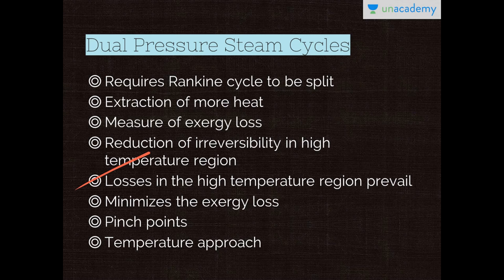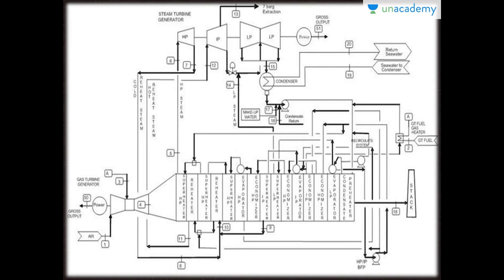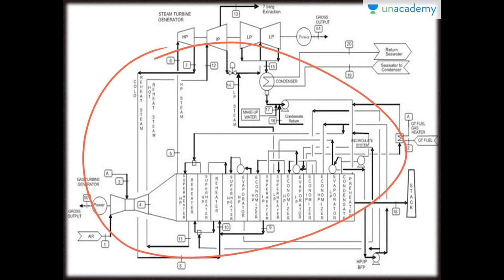At low steam pressure, the losses in the high temperature region prevail. Thus, there is an optimum steam pressure when the sum of areas A plus B plus C is at a minimum, minimizing the exergy loss. The differences between the two streams are called pinch points — X25 and D21 — also sometimes called temperature approach. This is a schematic flow diagram of a dual pressure steam generator, applied to two-stage steam turbines. There are two separate boilers within the boiler casing: the high pressure boiler which drives the high pressure turbine, and the exhaust steam from the high pressure turbine is then directed to the low pressure turbine.